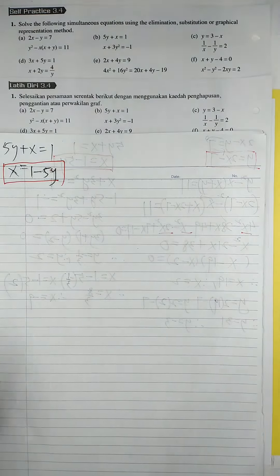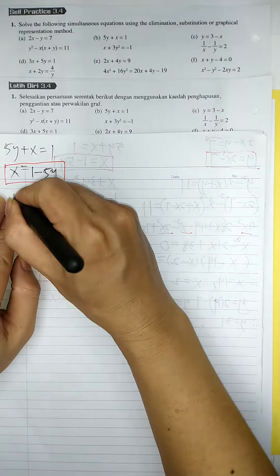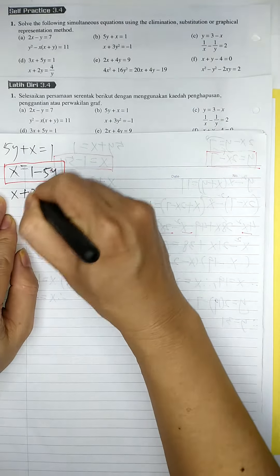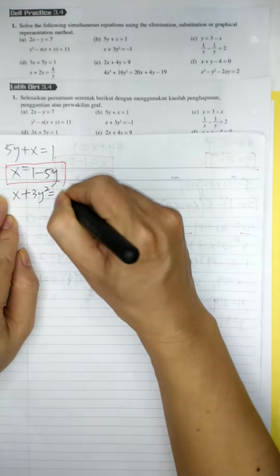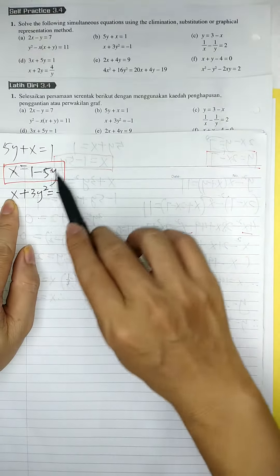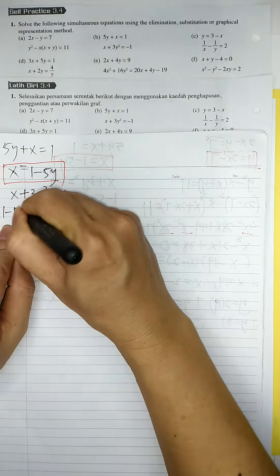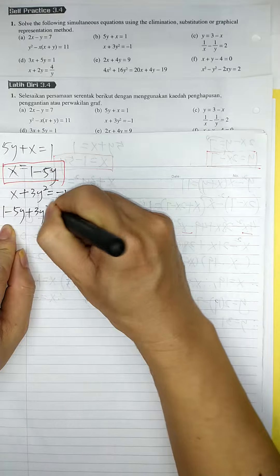So the second equation is x plus 3y squared equal to negative 1. Then x, replacing by 1 minus 5y, plus 3y squared equal to negative 1.